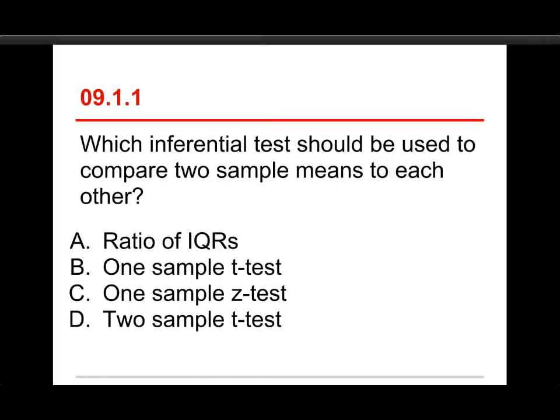The first question in this quiz is which inferential test should be used to compare two sample means to each other? And the choices are a ratio of IQRs, or a one-sample t-test, or a one-sample z-test, or a two-sample t-test. The answer to this one is a two-sample t-test.